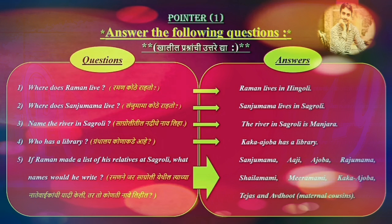First question: Where does Raman live? Raman Kote Rahato. Answer: Raman lives in Hinguli. Second question: Where does Sanju Mama live? Sanju Mama Kote Rahato. Answer: Sanju Mama lives in Sagruli.